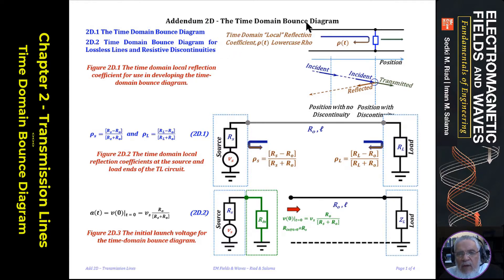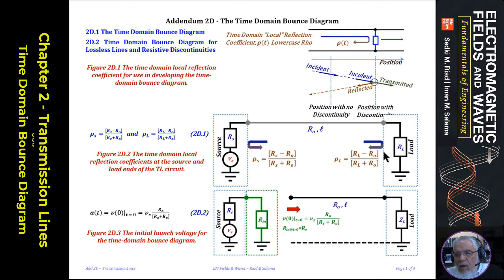We're talking here about the Bounce Diagram in the Time Domain. As we discussed in the chapter, the solution in the Time Domain is simple in the case of a lossless line or an approximation to a low-loss line. However, if the line is lossy, things get complicated. So we're going to confine our discussion here to lossless lines, which have a purely resistive characteristic impedance, and we will also confine ourselves to purely resistive discontinuities. Everything here will be real and resistive — both R sub 0, R sub L, R sub S — and the voltage source will be a Time Domain quantity. No Frequency Domain here; it's all time domain.